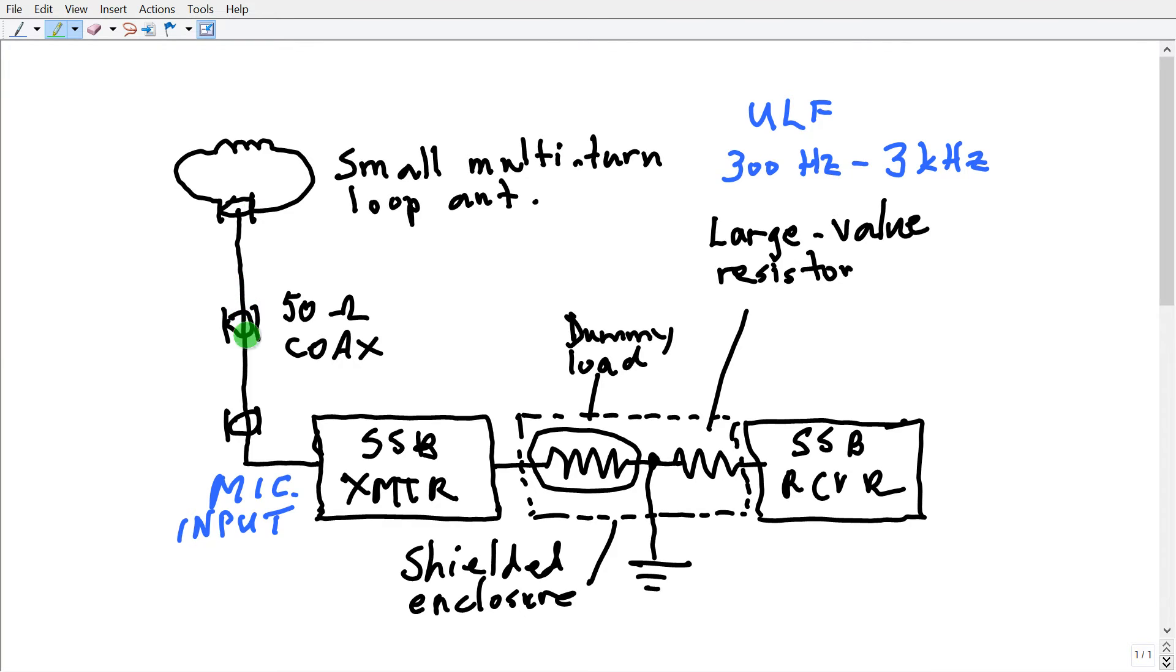Suppose then that your ULF signals from exactly the passband of the SSB transmitter go into this microphone input and create an SSB signal comprising whatever this antenna happens to hear. And it goes through a dummy load and a resistor to help keep the receiver from being fried from the transmitter output.